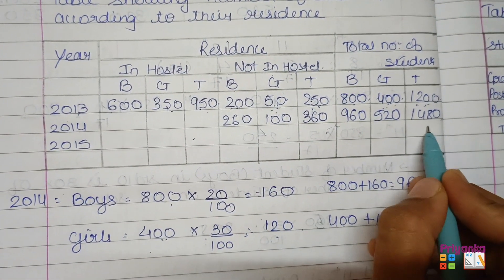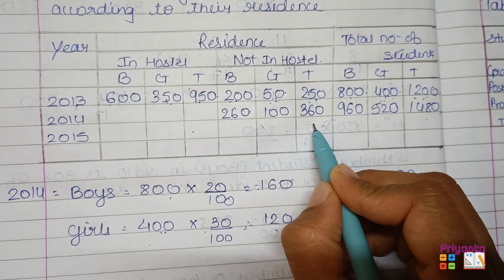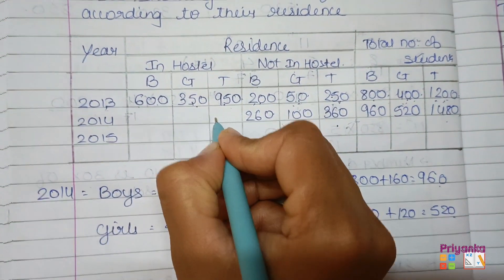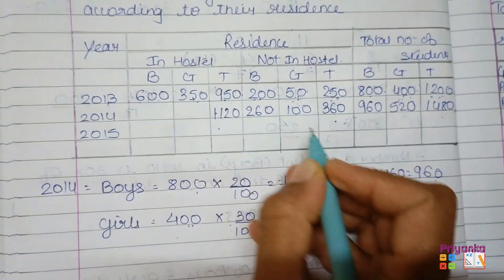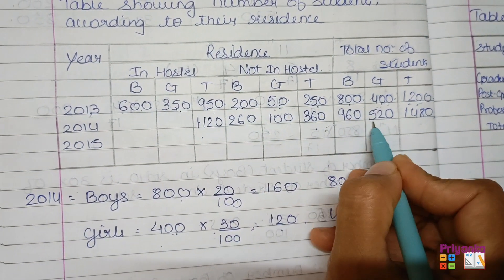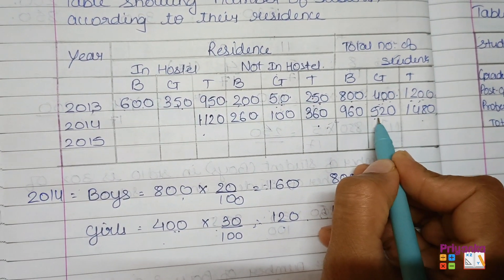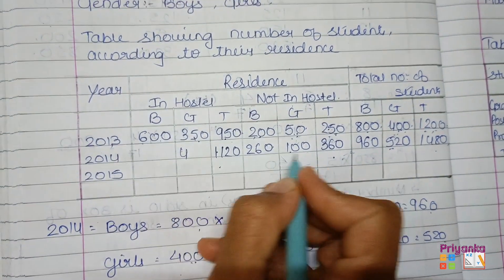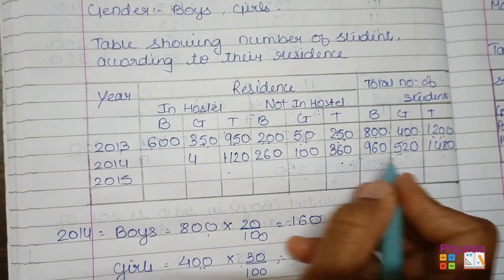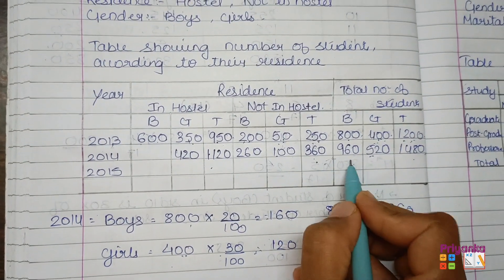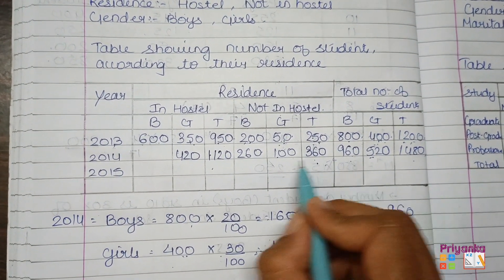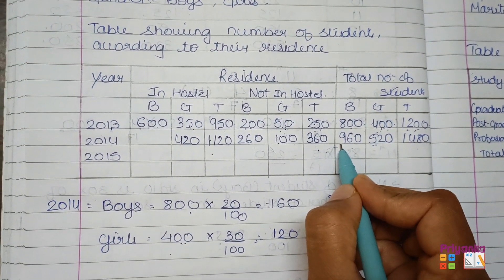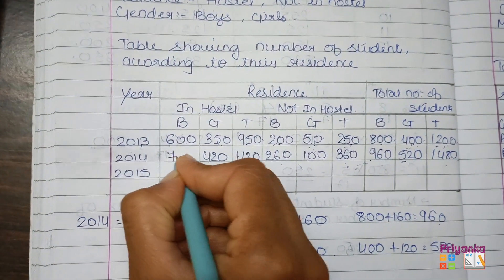Out of the total number of students, subtract not residing in hostel to get those residing in hostel. Total in hostel: 1480 minus 360 gives 1120. For girls: 520 minus 100 gives girls in hostel as 420. For boys: 960 minus 260 gives boys in hostel as 700.